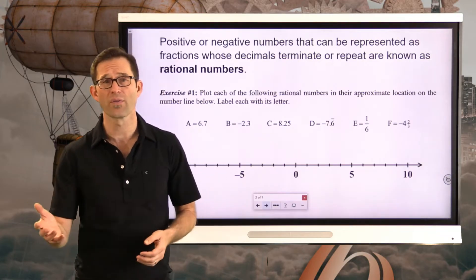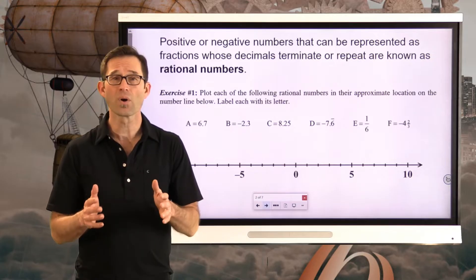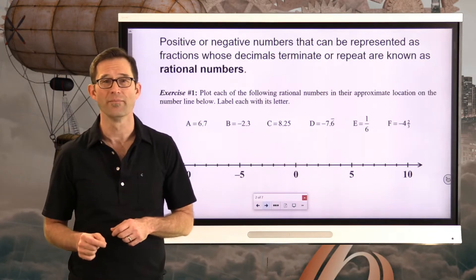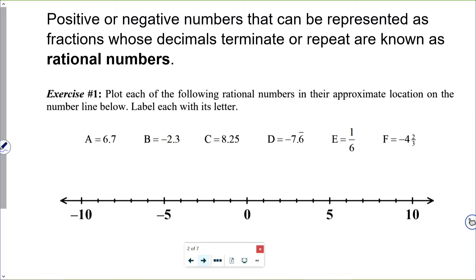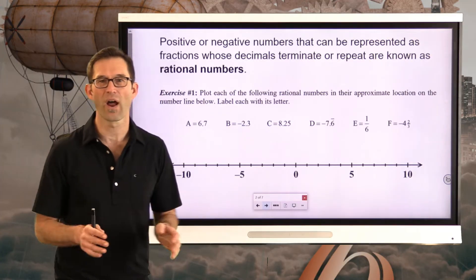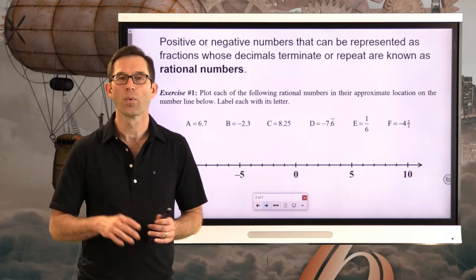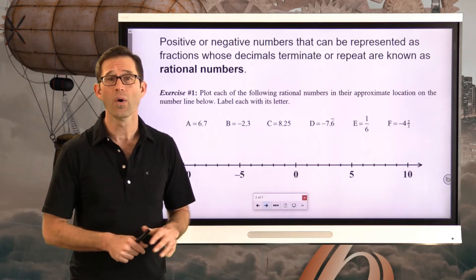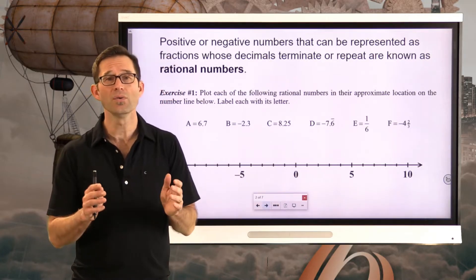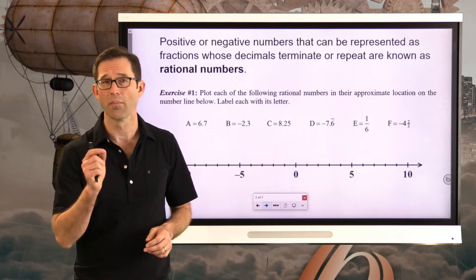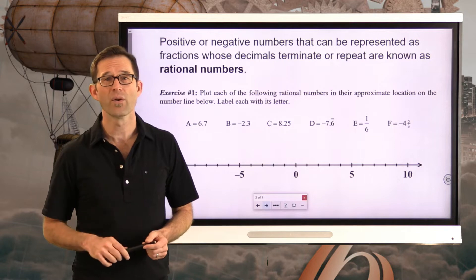Let's start by reviewing plotting negative and positive numbers on a number line. Exercise 1: plot each of the following rational numbers in their approximate location on the number line below and label each with its letter. I've got decimals, fractions, decimals with repeating digits — all that stuff. I'd like you to pause the video and try to get each number as close to its correct location as possible.